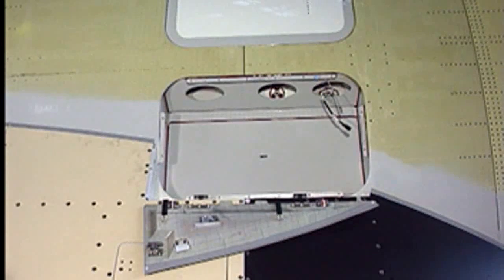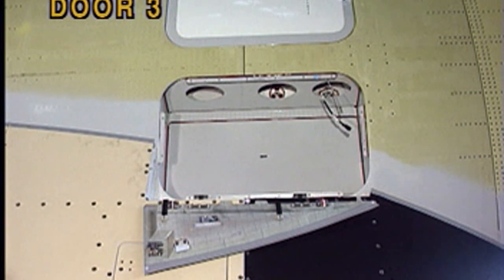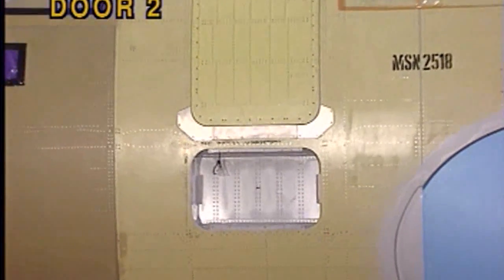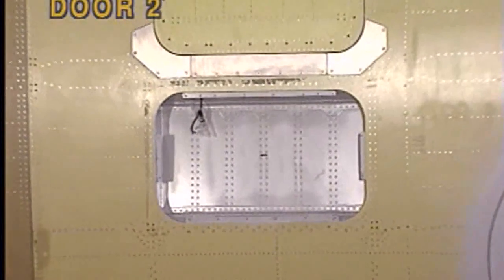The installation procedures are given for the escape slide stowage compartment located below the left door 3. The procedures for compartments located below the right door 3 and the left and right door 2 are almost the same.